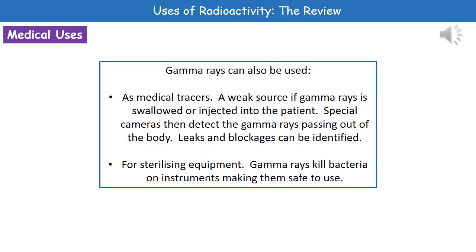The other use for gamma radiation is in sterilizing equipment. Gamma rays can be used to kill bacteria on instruments, making them safe to use. This is important when thinking about very delicate tubes and things made of plastic. Obviously we can't sterilize them through heating because heating plastic up will melt it. But using gamma rays means we can sterilize equipment that is very delicate and wouldn't withstand high temperatures.